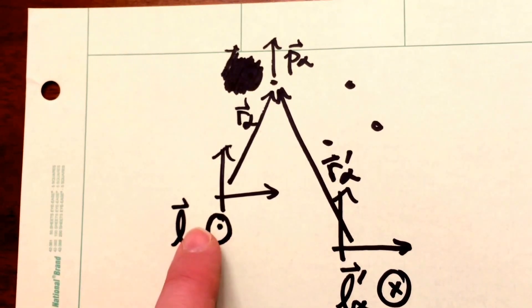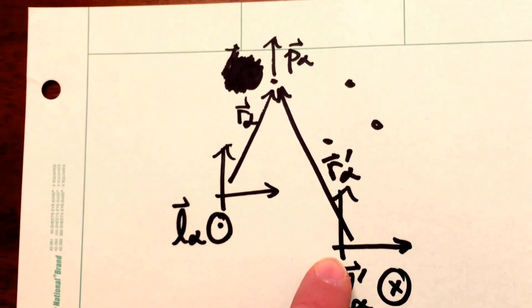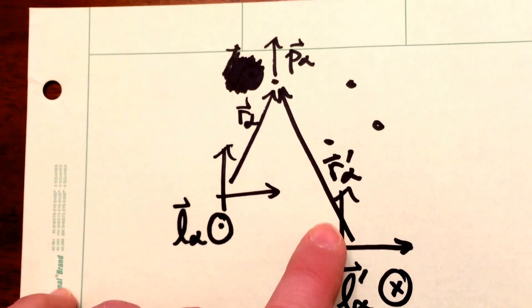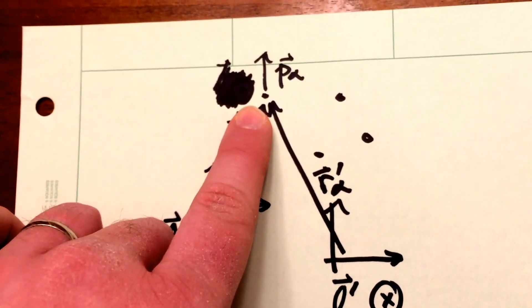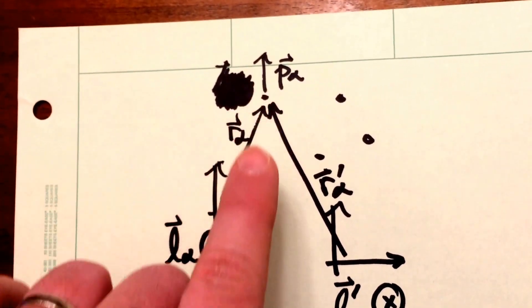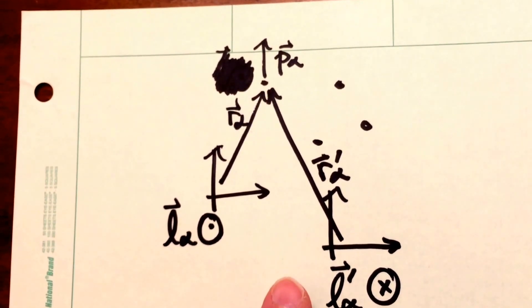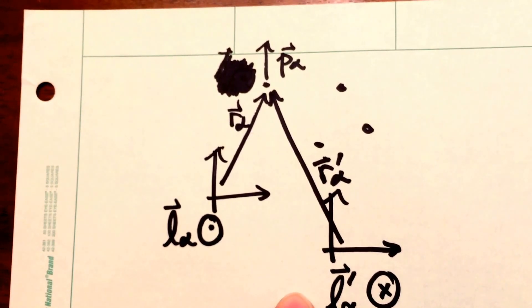But we can choose any coordinate system we like to measure torques relative to. We can in fact move our coordinate system over to here, for example, to some other point. And now the position vector for particle alpha is this vector here. And when we take the cross product between this vector and that momentum vector, we actually find that the angular momentum measured in this coordinate system points into the page.